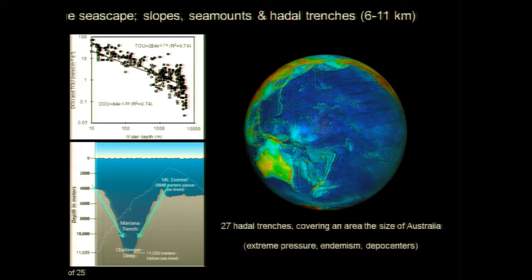There are about 27 hadal trenches covering an area the size of Australia, characterized by extreme hydrostatic pressure and endemism — organisms adapted to these high pressures. They have, over the past 20 years, been considered sites of deposition of material. Early studies also indicated that when you go really deep, activity starts increasing because of intensified deposition of material in these trenches. So maybe the pattern reverts when we go really deep, and the deep sites of the global ocean become hotspots for deposition and turnover of carbon.